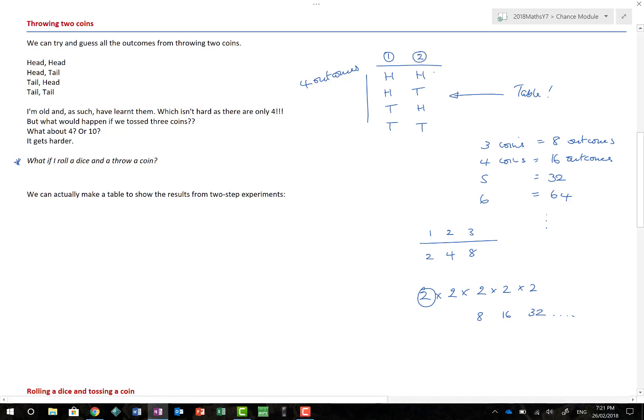So what if I roll a die and throw a coin? Well, if we know the single-step outcomes, and we know for a coin it's head and tail, and for a die it's one, two, three, four, five, and six, I already know that because there's two outcomes there, and there's six outcomes there, that if I take these two and times them together, then I'm actually going to end up with 12 outcomes.